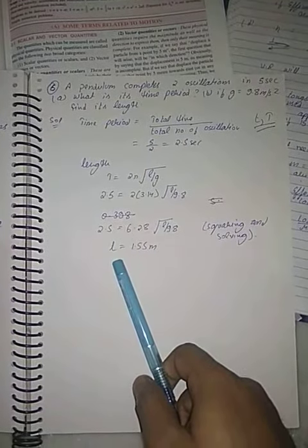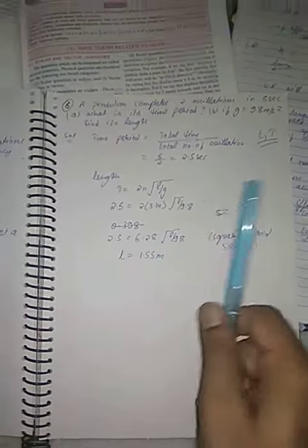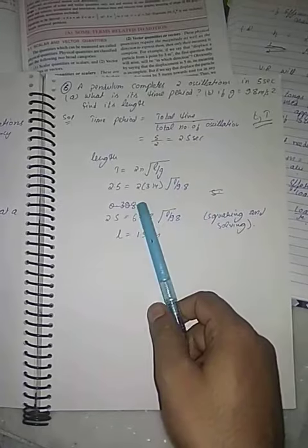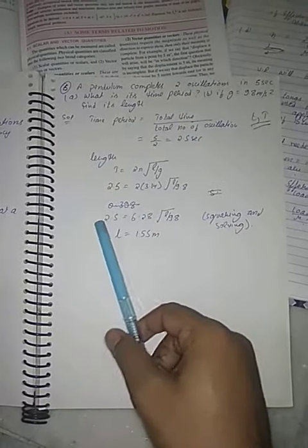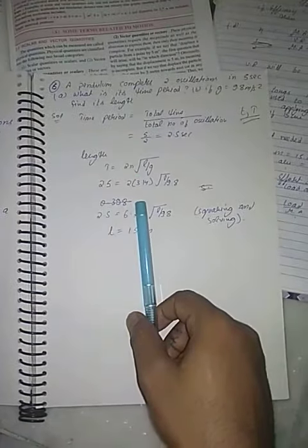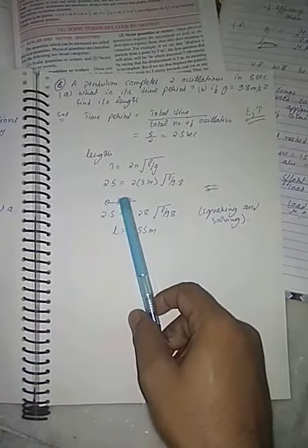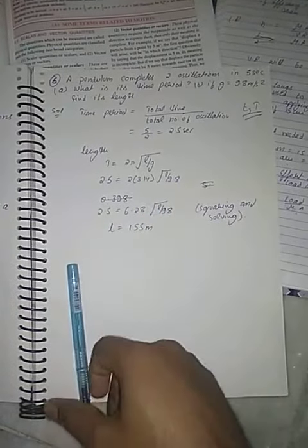Now students, do all the questions. I have given you the theoretical questions also. There are total around nine numericals, out of which one or two are theoretical only. Do the solution of these and complete the first chapter. Video of the second chapter I have already sent you, so go through that video. The rest of chapter 2A will be completed in the second video. All the best!